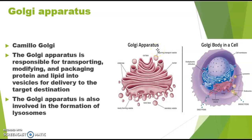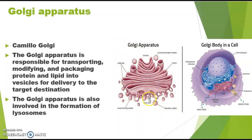So what is its function? Basically, when the endoplasmic reticulum synthesizes proteins, the transportation, modification, and packaging of those proteins is done by the Golgi apparatus. After packaging, it goes to the target destination with these organelles. You can see there are some secretory vesicles — these contain modified proteins that are ready to work at their destination. Golgi apparatus is also responsible for the formation of lysosomes.